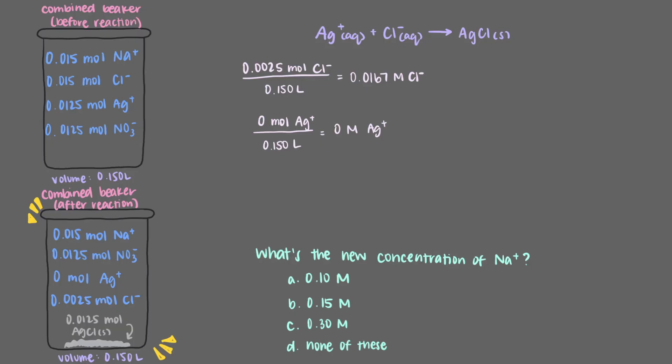To find the sodium ion concentration in molarity, we look to our new beaker. We will divide the number of moles, 0.0150 moles of sodium, by the volume, 0.150 liters. This means that the new concentration of sodium ions is 0.10 molar.